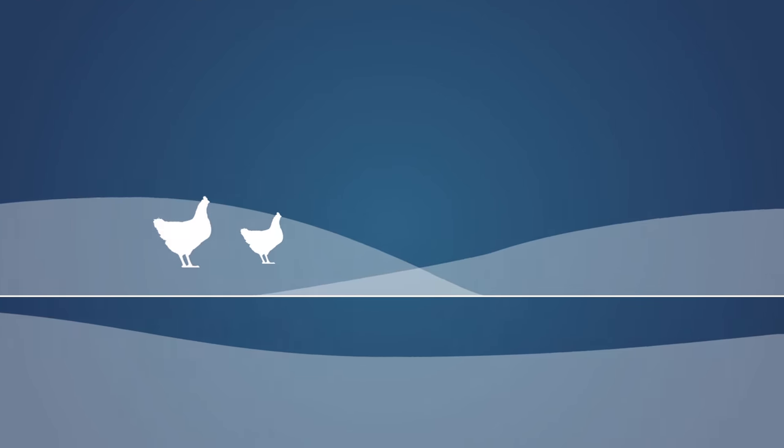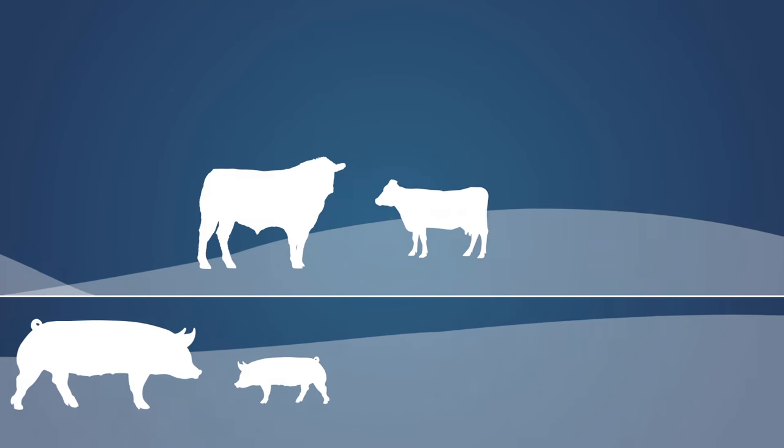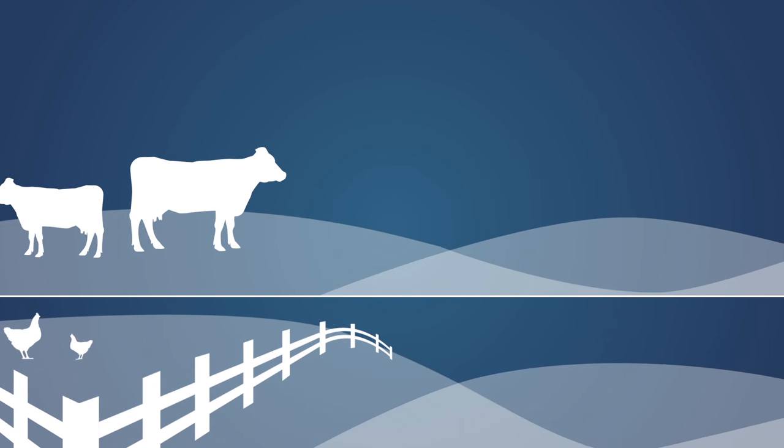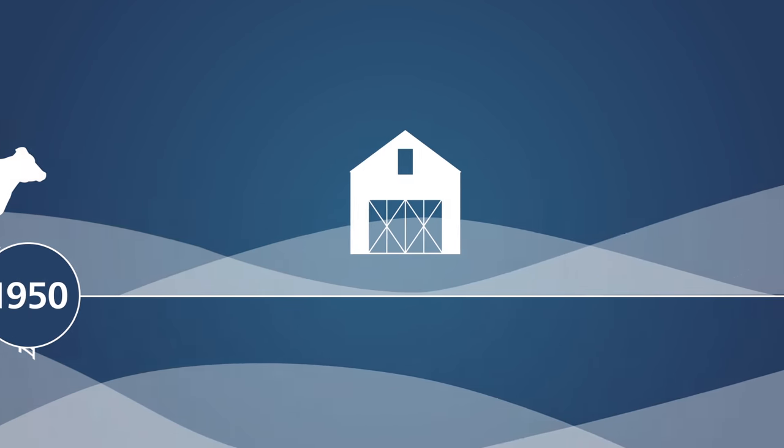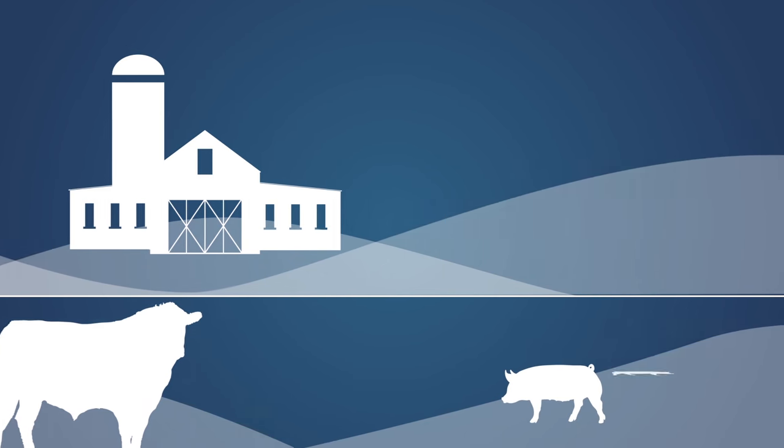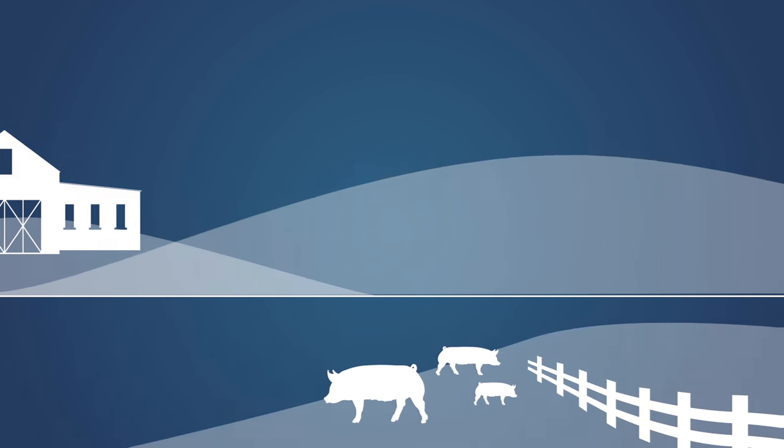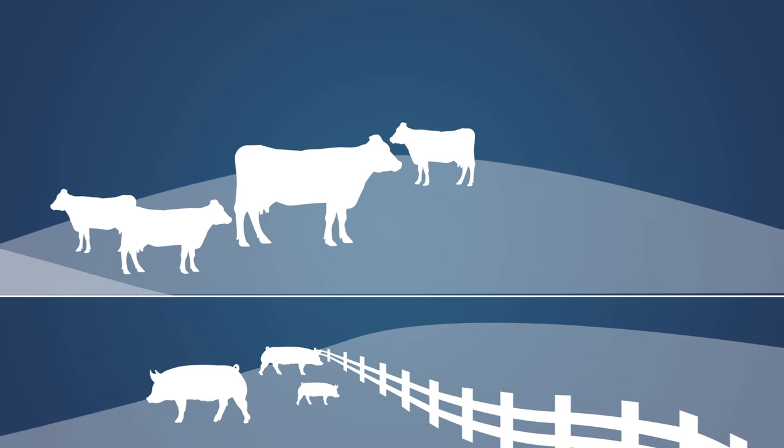With some feed ingredients in short supply, government and farmers urge scientists to help. And in 1950, they have a breakthrough, discovering that animals fed low doses of antibiotics are healthier, live longer, and grow faster.